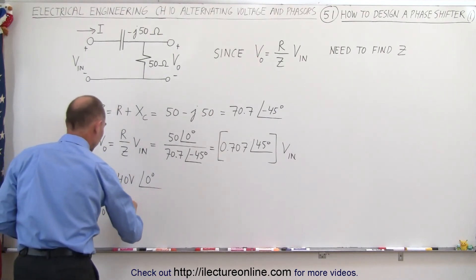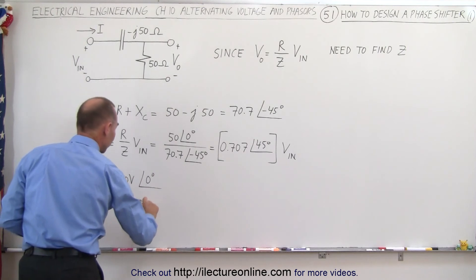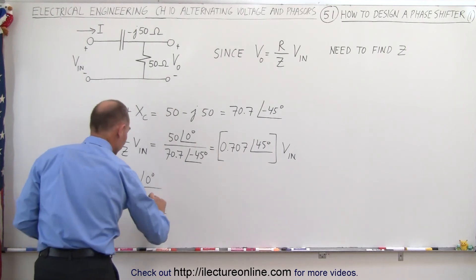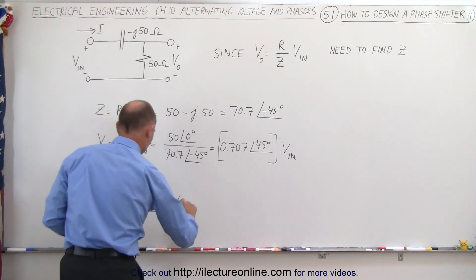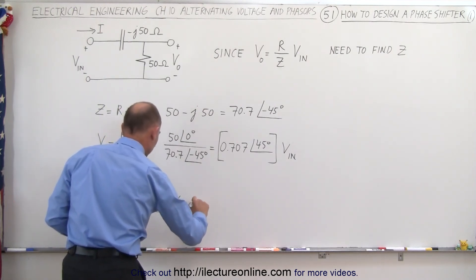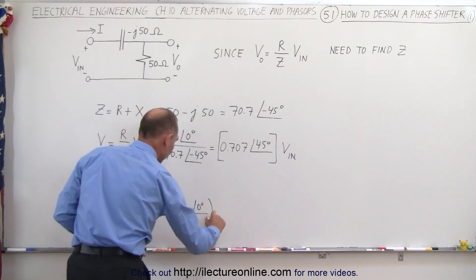would be equal to 0.707 with a phase difference of 45 degrees. And we're going to multiply that times 40. And notice,